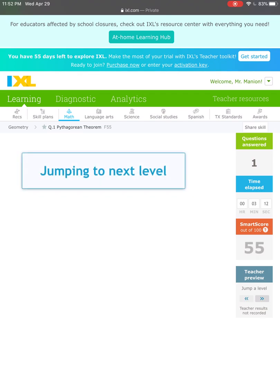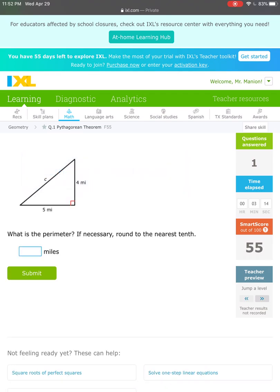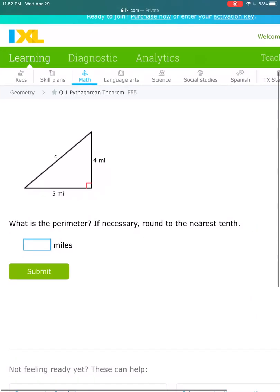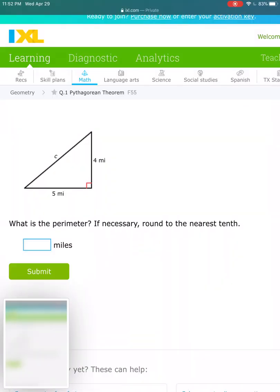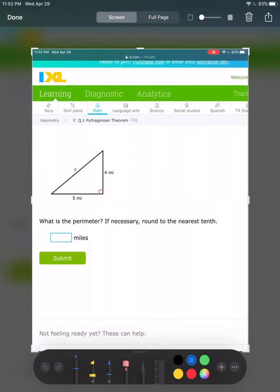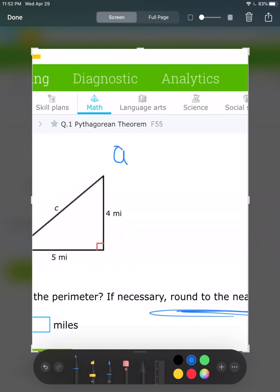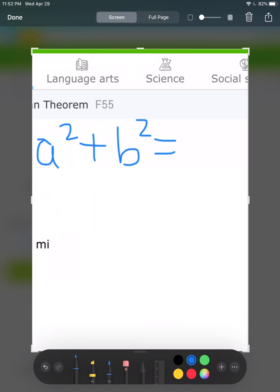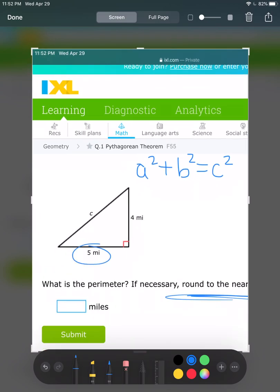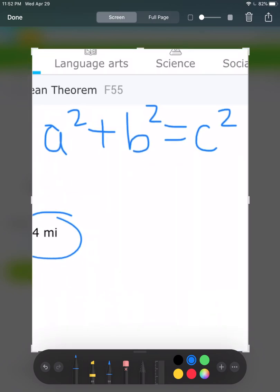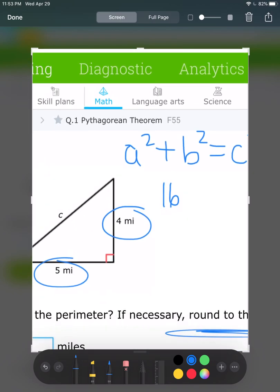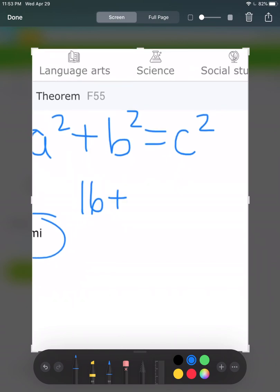Again, what is the perimeter? Same style of question. If necessary, round to the nearest tenth. That's probably going to be necessary. Again, A squared plus B squared equals C squared. I have A and B in this case. 4 squared is 16, 5 squared is 25 equals C squared.